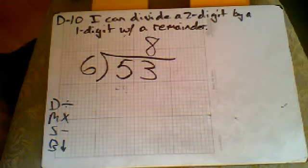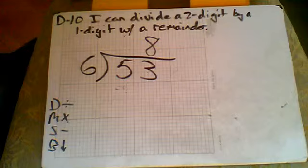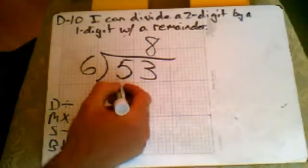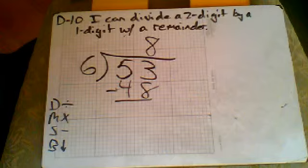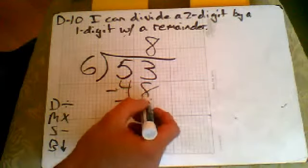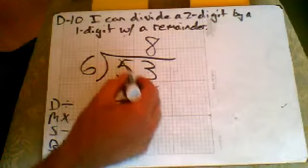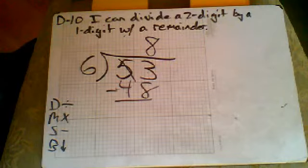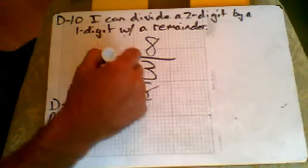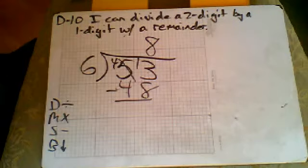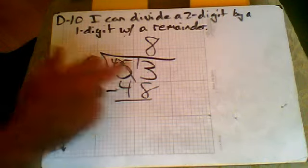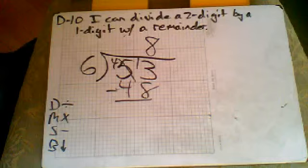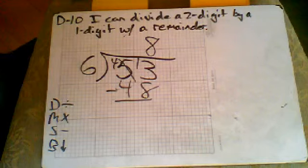So I know that 6 goes into 53 eight times, so I can kind of picture 6 groups and 8 ones inside of each group. 6 times 8 was 48, and then we're going to subtract at this point. So 8 from 3, we're going to have to borrow here. So that's going to be a 4, and this is going to be a 1. Actually, so you're borrowing the 1 ten as you remember from previous targets and bringing that 1 ten over to the ones column, so it becomes a 13.